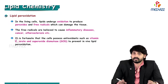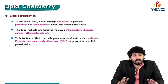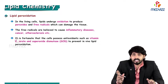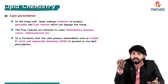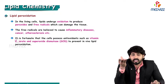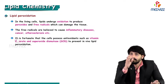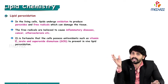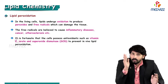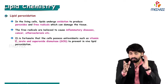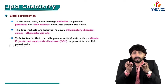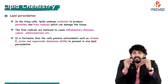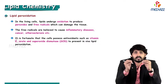Lipid peroxidation is when lipids degrade in a biological system at the cellular level. In living cells, lipids undergo oxidation to produce peroxides and free radicals, and this process is a continuous cyclic chain. Since the cell membrane is made up of a lipid bilayer of fatty acids, when one fatty acid undergoes peroxidation it starts damaging the other fatty acid - it is a continuous cycle, which is a very dangerous condition.